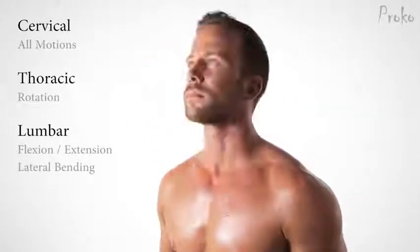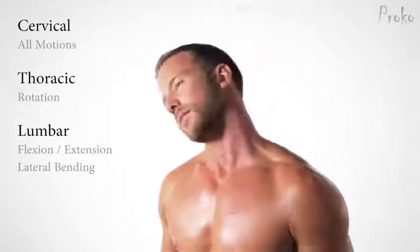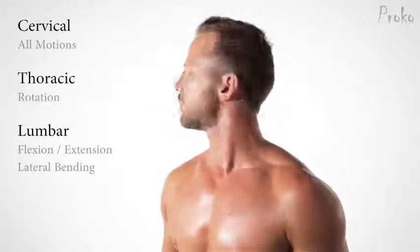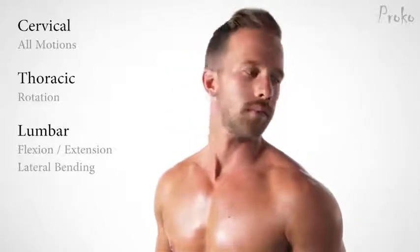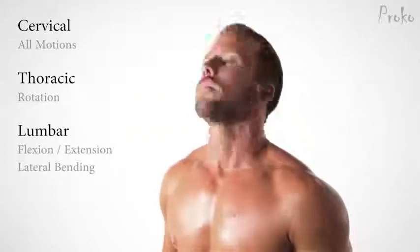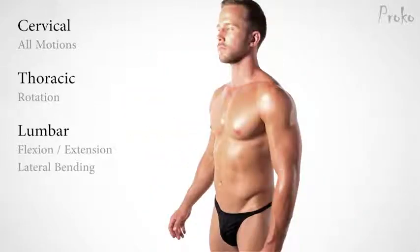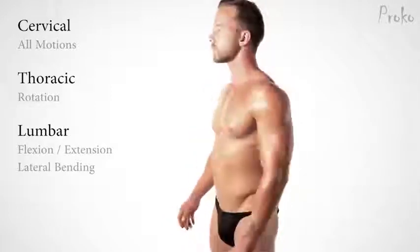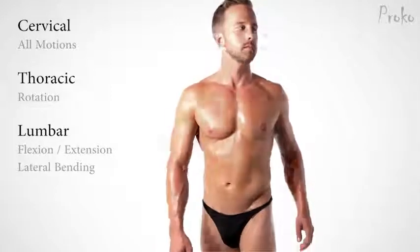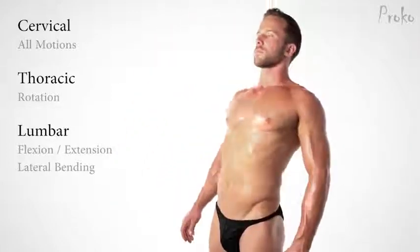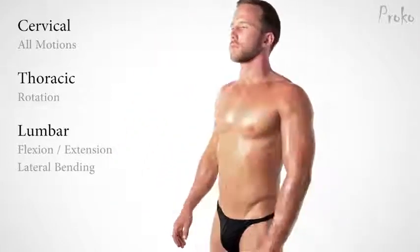Let's review. The cervical section is somewhat separate from the rest of the spine — it moves the head around and has a lot of freedom to move in all directions. The thoracic and lumbar sections are more limited and have to work together: the thoracic takes care of most rotation, and the lumbar takes care of flexion, extension, and lateral bending.